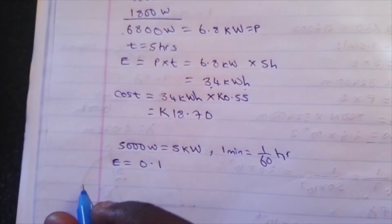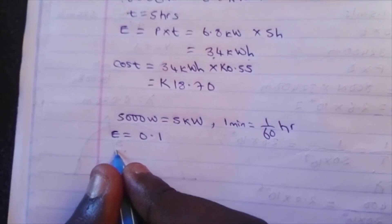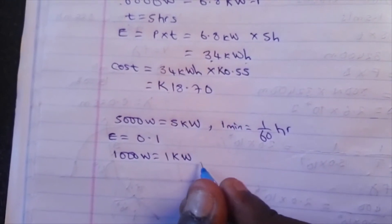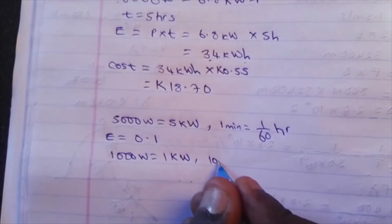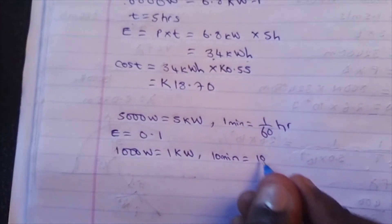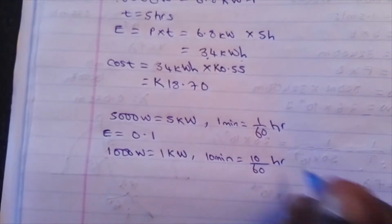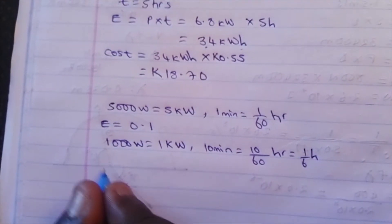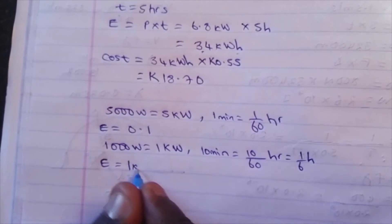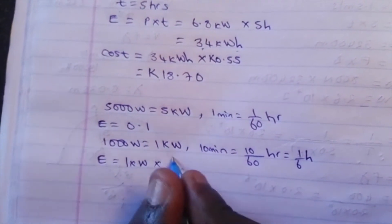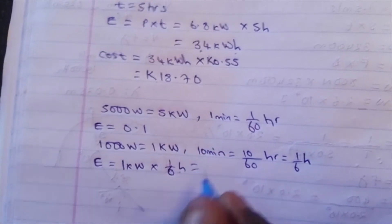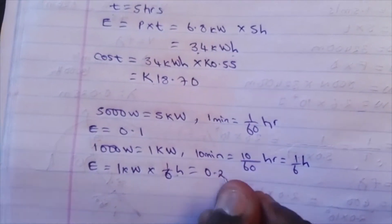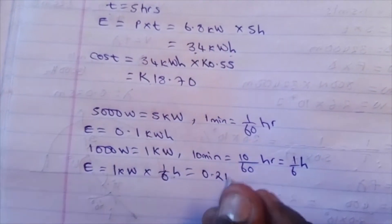For option B, we've been given 1,000 watts, which is equal to 1 kilowatt. The time is 10 minutes, which is equal to 10/60 hours — that's 1/6 of an hour. So the energy will be equal to 1 kilowatt times 1/6 hours, which is 0.167 kilowatt hours.